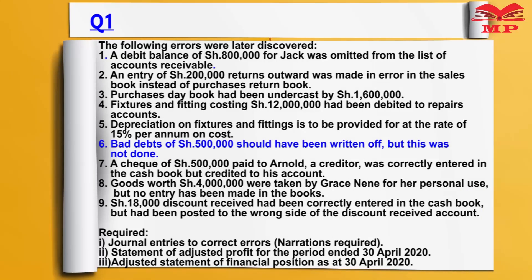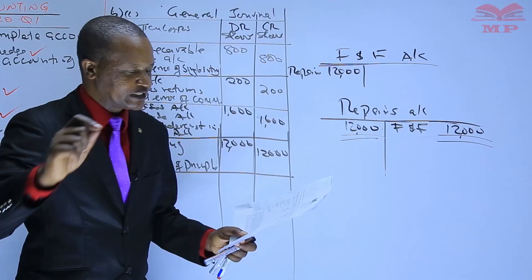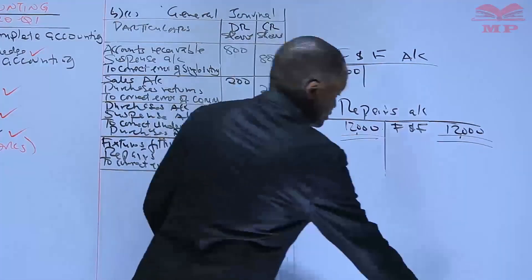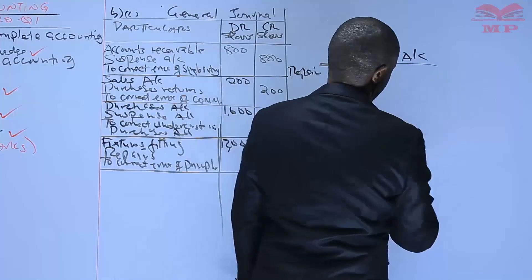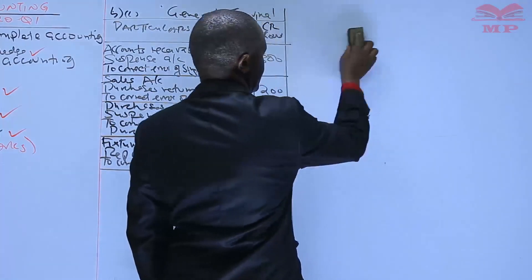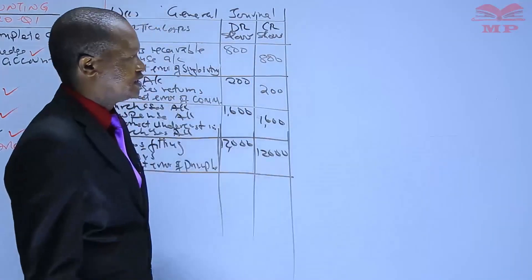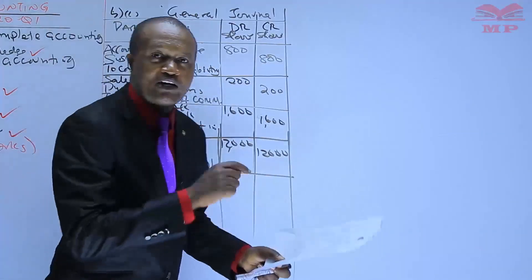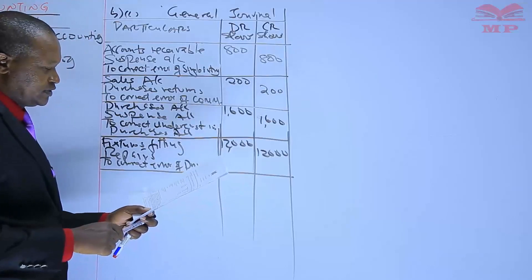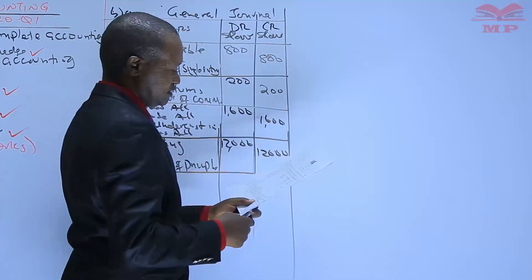Bad debts of half a million should have been written off, but this was not done. That language is synonymous with saying that the transaction was omitted. This was not done — that means it was omitted. So this is an error of omission: bad debts should have been written off.